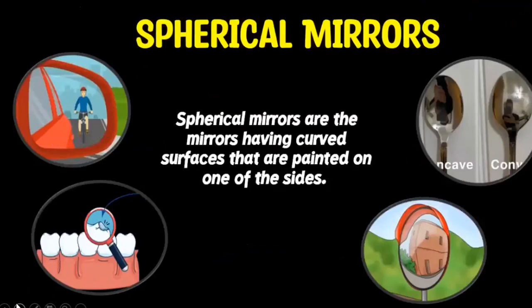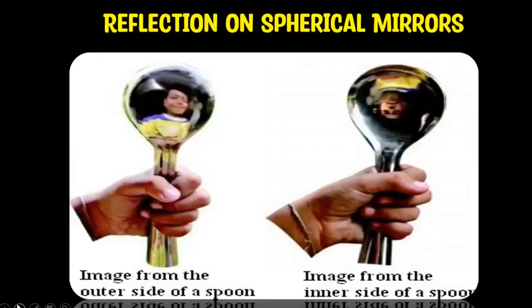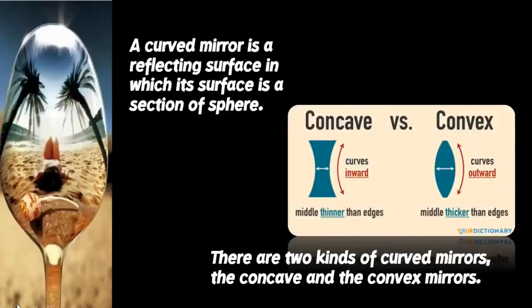Spherical mirrors are mirrors having curved surfaces that are painted on one of the sides. Look at your reflection on a shiny metal spoon — is your reflection the same on the two surfaces of the spoon? How will you compare your reflection on the two surfaces? This is a reflection on curved mirrors. A curved mirror is a reflecting surface in which its surface is a section of a sphere. There are two kinds of curved mirrors: the concave and the convex mirror.